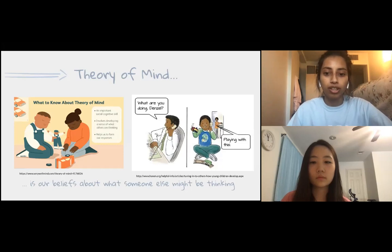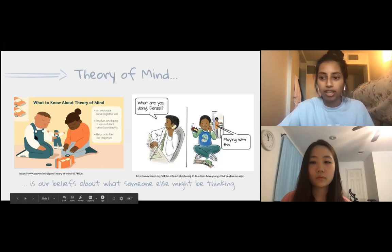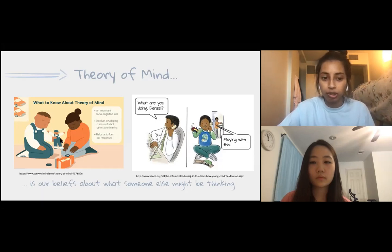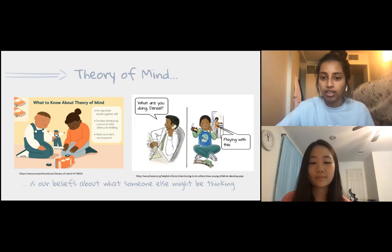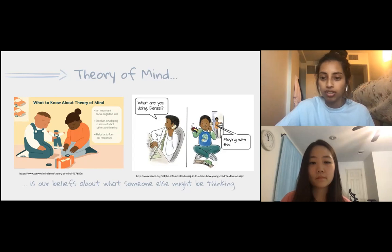In this first image on the left, we have a girl who is clearly sad and a boy who's not able to recognize that she is sad and is still showing her the toy — so he does not have a fully developed theory of mind. In the picture on the right, a father calls home saying 'what are you doing Denzel?' and Denzel replies 'playing with this,' not realizing that his dad cannot see what he's holding. So children also don't have a fully developed theory of mind.